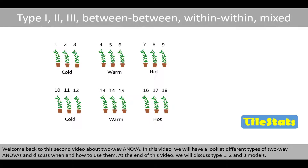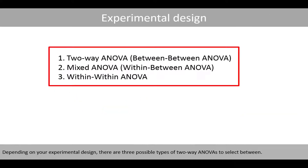Welcome back to this second video about two-way ANOVA. In this video we will have a look at different types of two-way ANOVAs and discuss when and how to use them. At the end of this video we will discuss type 1, 2 and 3 models. Depending on your experimental design, there are three possible types of two-way ANOVAs to select between.